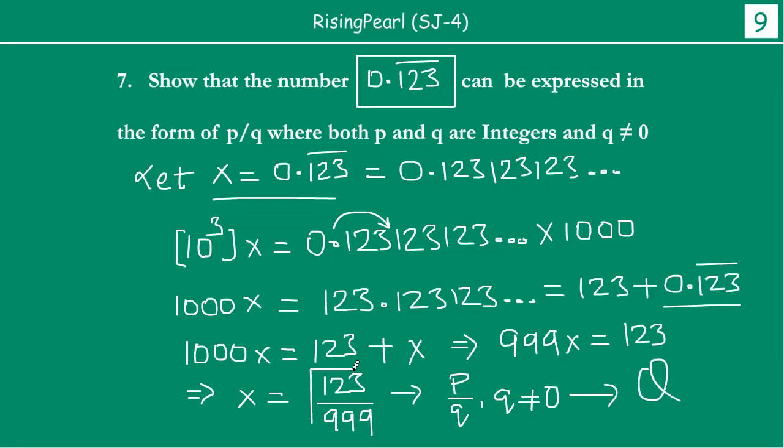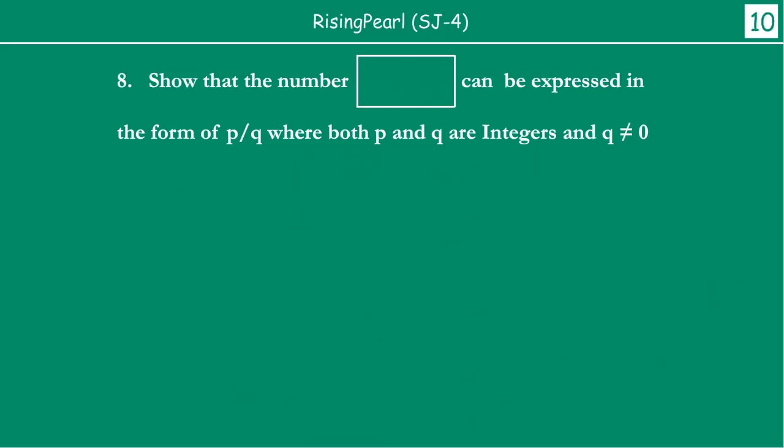So here we have seen friends that our initial decimal number which was 0.1, 2, 3 bar, that is 0.1, 2, 3, 1, 2, 3, 1, 2, 3 dot dot dot. This number is actually nothing but 1, 2, 3 divided by 999 and so we can say this is a rational number. Now friends, before we wrap up we will just take one last example. So we hope that you are following us along and you are able to understand the logic of why we are doing what we are doing.